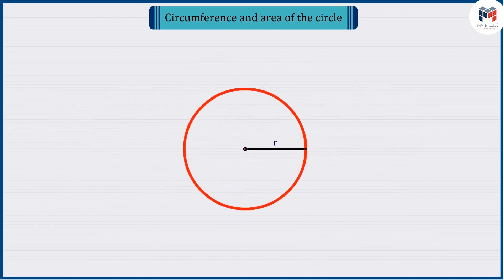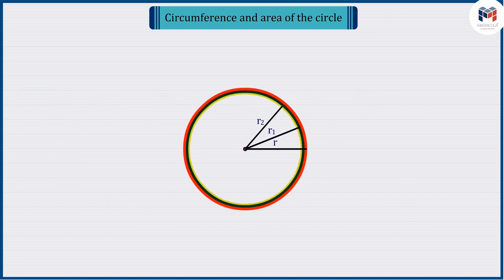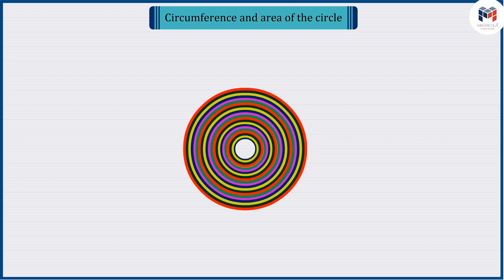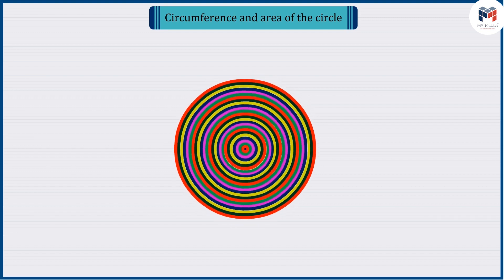It is a circle with radius r. If the circle with radius r is filled with the inner circles of radius r1, r2, r3 etc., then we see something like this.